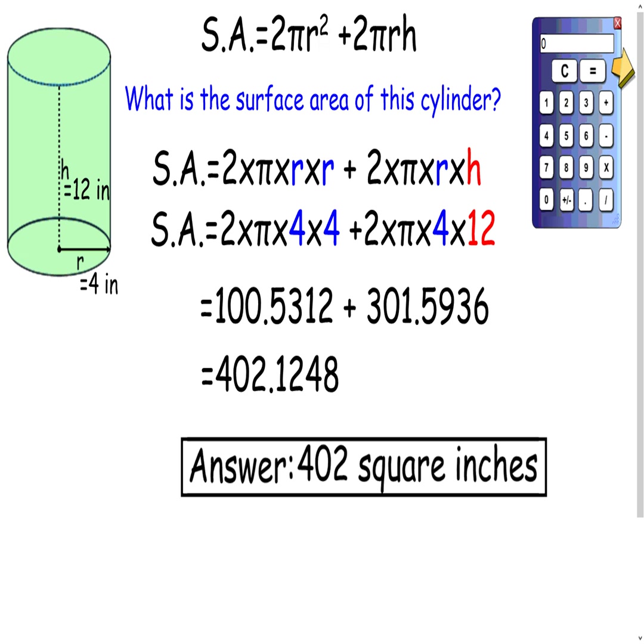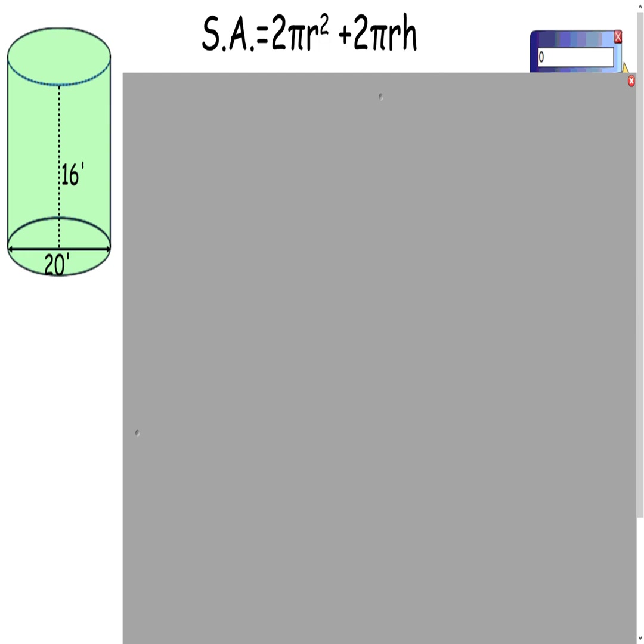Okay, let's look at our next example. All right, here's our cylinder, and our cylinder has a diameter of 20 feet and a height of 16 feet. So if the diameter is 20 feet, we have to divide that by 2 to come up with our radius, which is 10 feet.